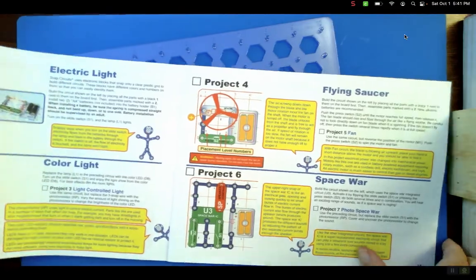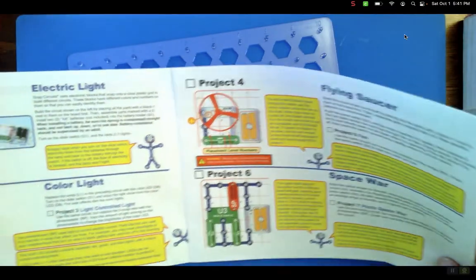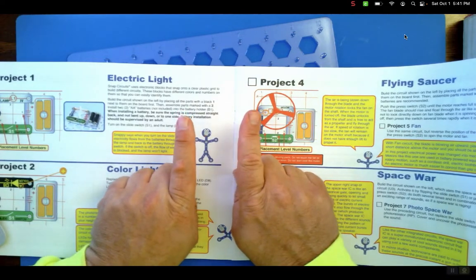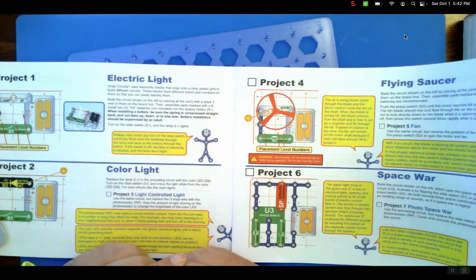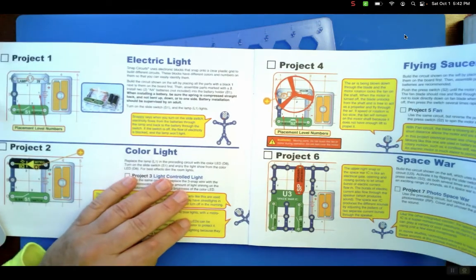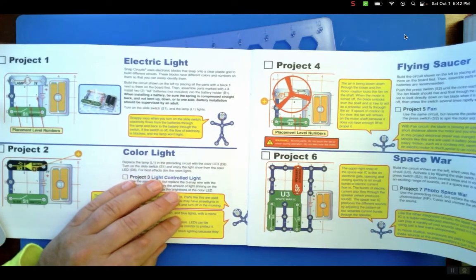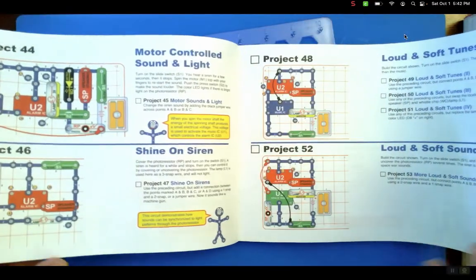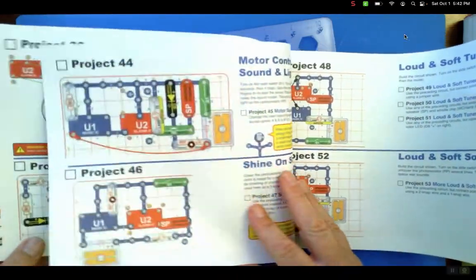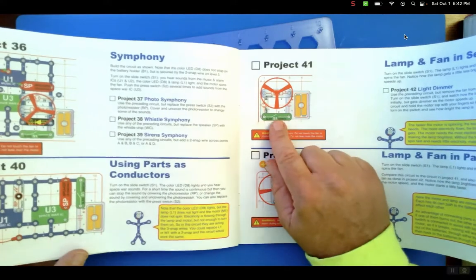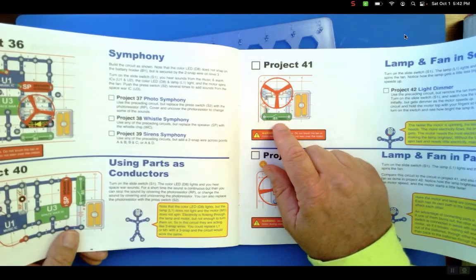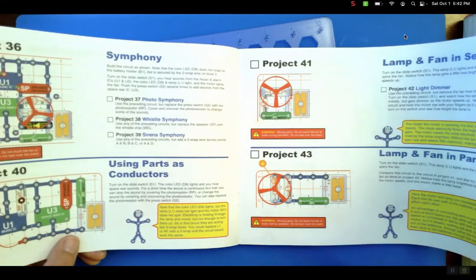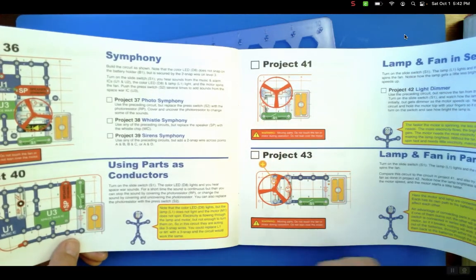Then I would go to parallel, maybe getting the two lamps in there so you can see they're both lighting up. Then I would get to what they have at 40 something with the indicator lights, the switch, the lamp and fan in series so you get an indicator light showing that the motor is on, and in parallel so they can see the difference.